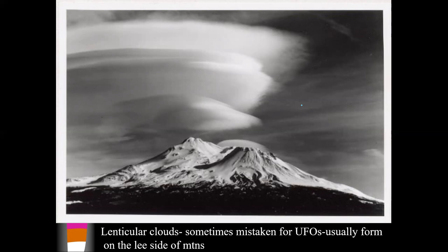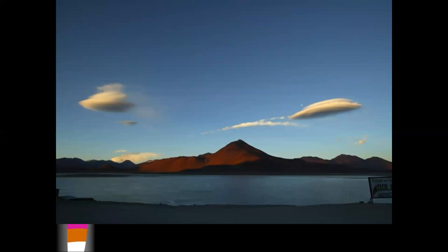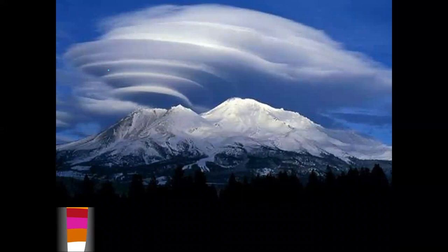Sometimes lenticular clouds get mistaken for UFOs — they can sometimes look actually metallic. This one is on the lee side of Mount Shasta. The first official UFO sighting in this country happened in the 1950s when a pilot said he saw a UFO while flying on the lee side of Mount Rainier — maybe he just saw a lenticular cloud.